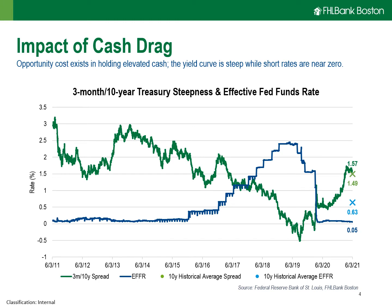What we have here is a graph showing two different metrics: in green, the spread in the treasury yield curve between the three-month mark and the 10-year tenor, and in blue, the effective fed funds rate. We're trying to show a rough proxy for the opportunity cost of sitting in cash versus extending further out the curve and investing at higher yields. With short-term interest rates so low — very close to zero percent — there's a significant amount of cash drag relative to a fair amount of steepness in the yield curve.